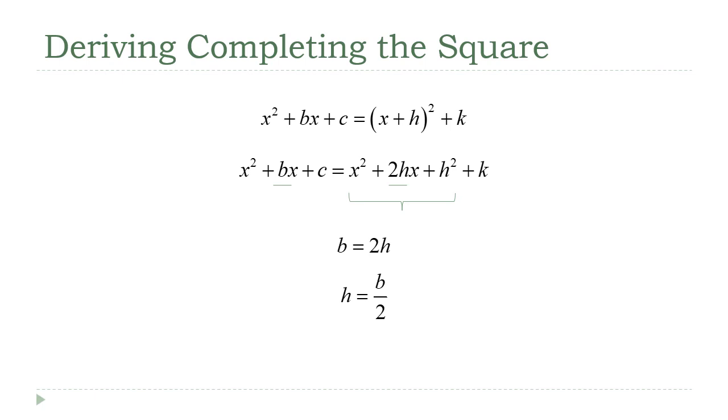But we really didn't want h; we wanted h squared—that's the number we're going to add. So if I square both sides of this, h squared is equal to b over 2 quantity squared, and that's the formula you're given in your algebra classes.